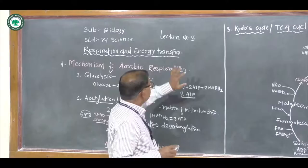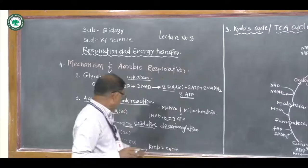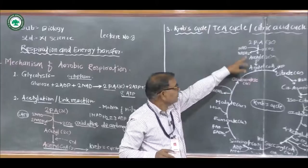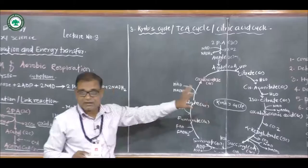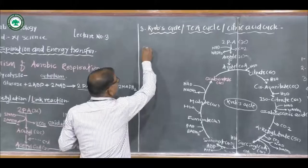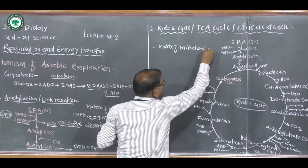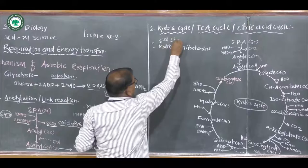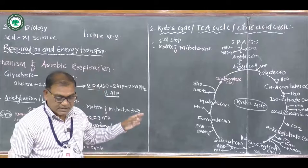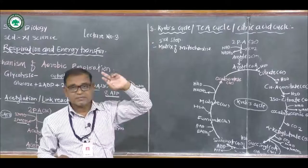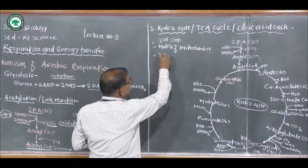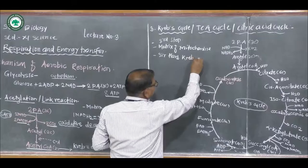The third step: acetyl coenzyme A enters the matrix of mitochondria, where the Krebs cycle takes place. The Krebs cycle was first discovered by Sir Hans Krebs, and hence it is called the Krebs cycle.